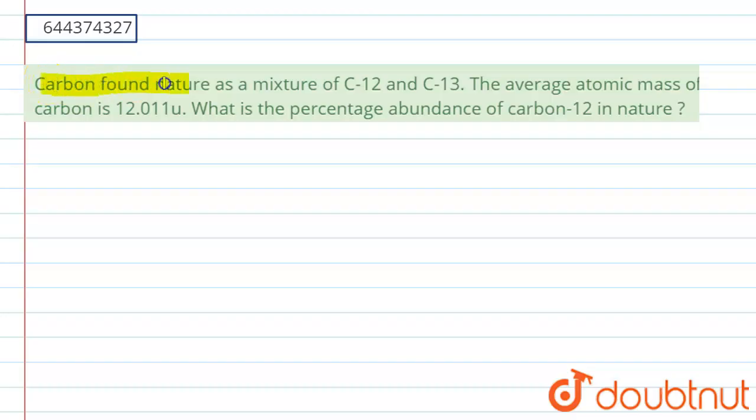It is given carbon found in nature as a mixture of C-12 and C-13, and the average atomic mass of carbon is 12.011 u. So what is the percentage abundance of carbon-12 in nature? So basically we have...